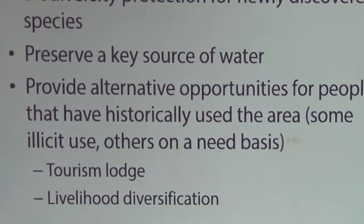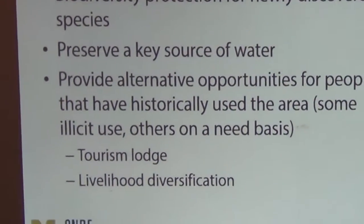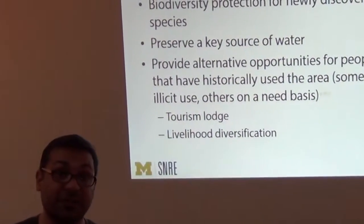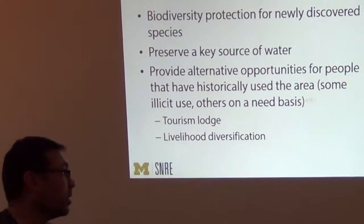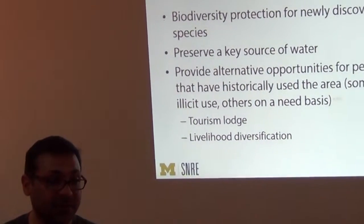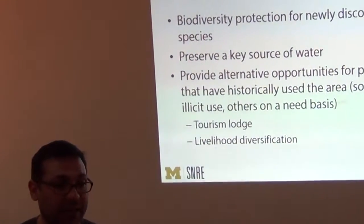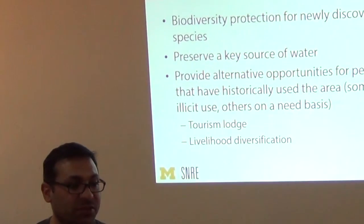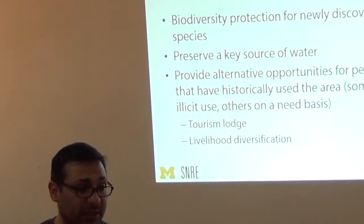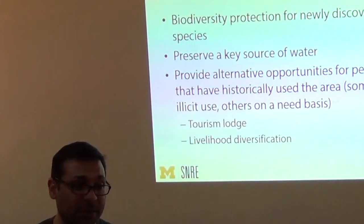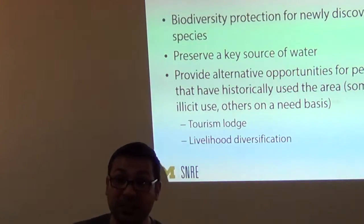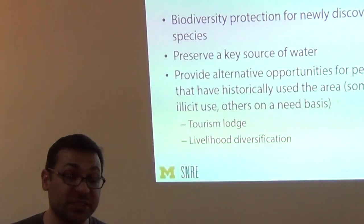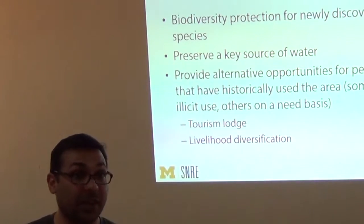Why do we want to make the case for this new protected area? We want to provide biodiversity protection — one of our goals we all agreed on was no species loss. We want to preserve a key source of water, because there's a river essential for human livelihoods and ecosystem services. It provides alternative opportunities for people who have historically used the area, some illegally and some out of need. The protected area would be accompanied by a tourist lodge to diversify livelihoods.